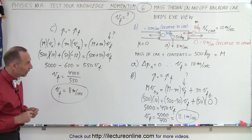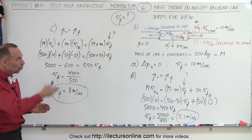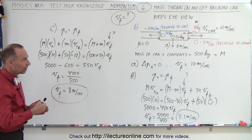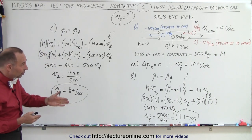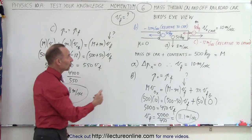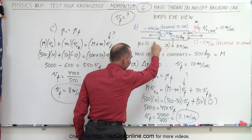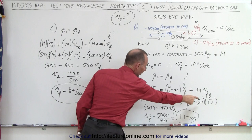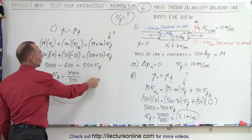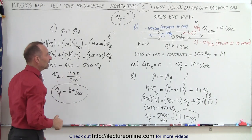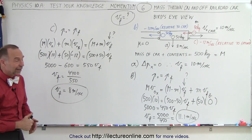And there we go — that is how we handle those three different scenarios. There is no change in the velocity of the car when the bag is thrown sideways. When the bag is thrown out of the car, we have to make sure we use the velocity relative to the ground, not relative to the car. And finally, when something is thrown in the opposite direction, that gives a negative velocity relative to the ground. And that is how it's done.